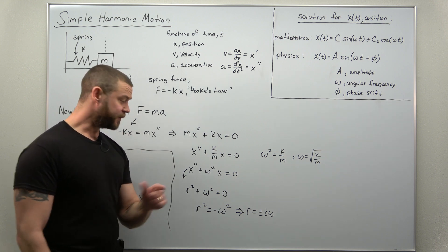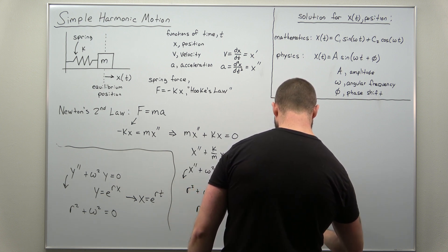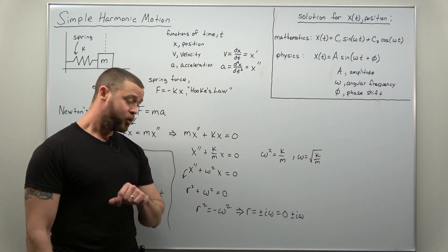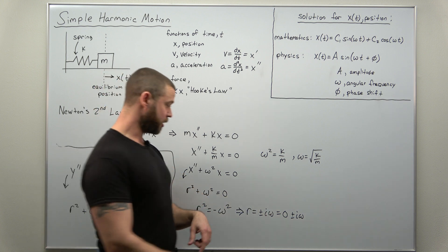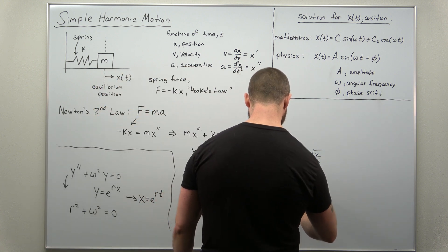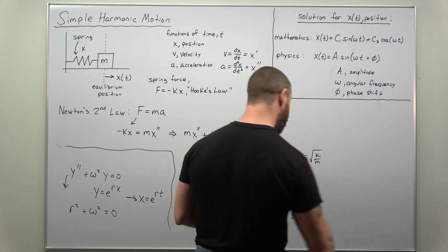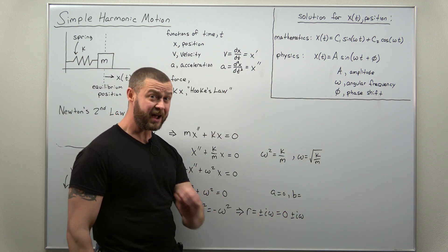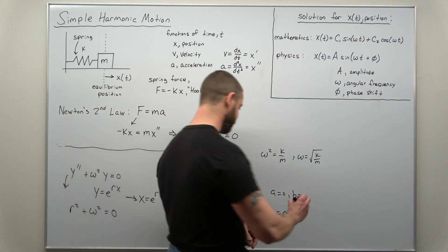We write the roots in the form of a complex number: zero plus or minus i omega. We can identify our real part a, which is zero, and our imaginary part b, which is the number multiplying i — in this case, the quantity omega that we introduced.